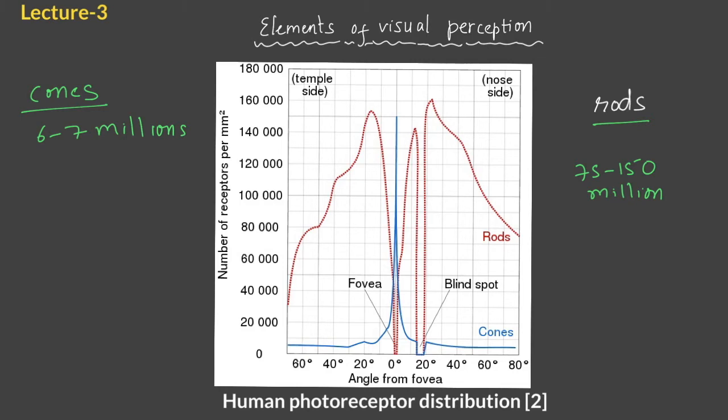You can look at the number of receptors per mm square of the area, so it is very high for cones as well as rods. The cones only work during, as you can see the cones are less in number, they only respond to well lit conditions of light. So if you have surroundings which are very dark then only rods will be activated.